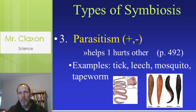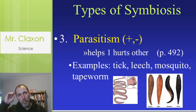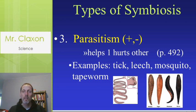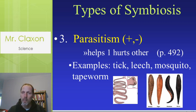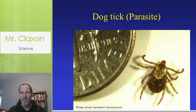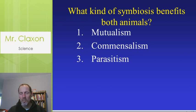Finally, the third type is parasitism — it helps the parasite but actually harms the other animal. We're probably most familiar with examples like ticks, leeches that attach and suck the blood of an animal, mosquitoes, and tapeworms. Those are all considered parasites. This picture of a tick makes me a little itchy, but those are the examples.